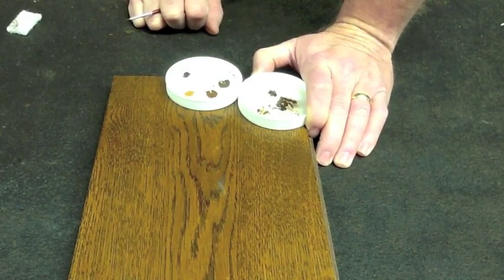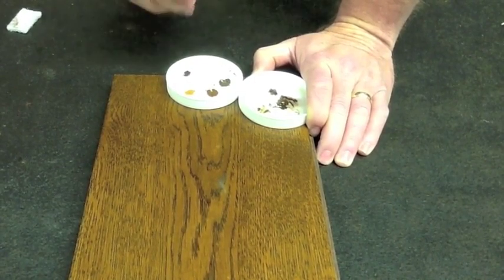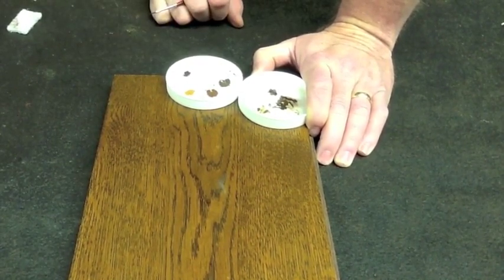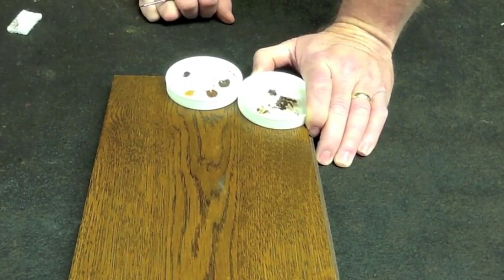If there's a problem with it, you don't have a lot of material built up. It's very easy to take a scotch-brite pad, steel wool, and remove that to try again.